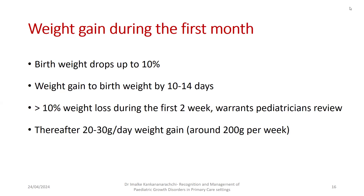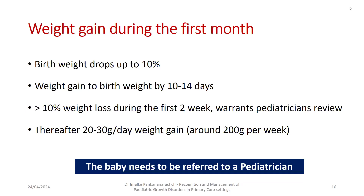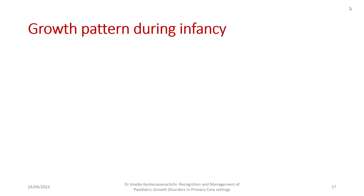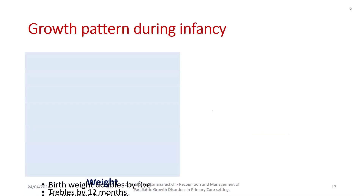During the first month we cannot use the growth chart — we must monitor weight frequently. After regaining birth weight by 10–14 days, the recommended average weight gain is 20–30 grams per day, roughly 200 grams per week. If you review a baby with 7% weight loss in two weeks, you aim for around 400 grams weight gain that month. The average weight gain per week decreases as babies grow older. A baby with more than 10% weight loss must be referred to a pediatrician.